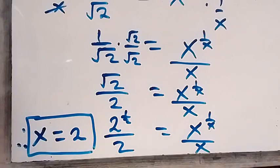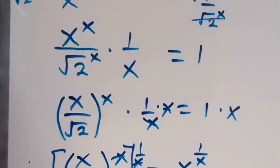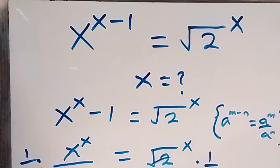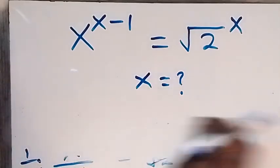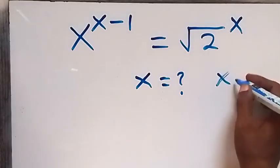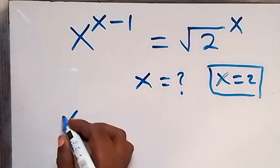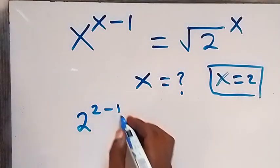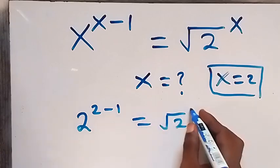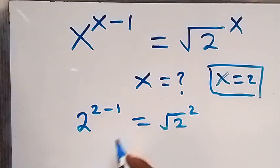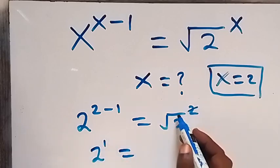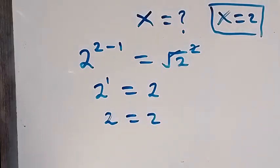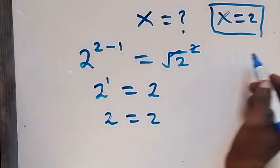Let's verify using the original equation x raised to power x minus 1 equals root 2 raised to power x. Substituting x equals 2: 2 raised to power 2 minus 1 equals square root of 2 raised to power 2. That gives 2 raised to power 1 equals square root of 2 squared, which is 2 raised to power 1 equals 2. The left hand side equals the right hand side, confirming x equals 2.